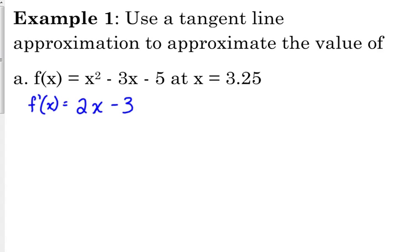So we're wanting to approximate for 3.25. Let's use 3. So that means we need the value of the derivative at 3, and we also need the value of the function at 3. So let's start with the derivative at 3. So 2 times 3 minus 3. That's 6 minus 3. Okay, so that's our slope. We want to label it as slope.